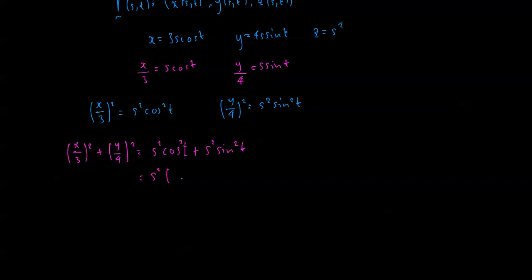Factoring out s², we get cos² t + sin² t. We know that cos² t + sin² t = 1, so we're just left with s². On the left-hand side,